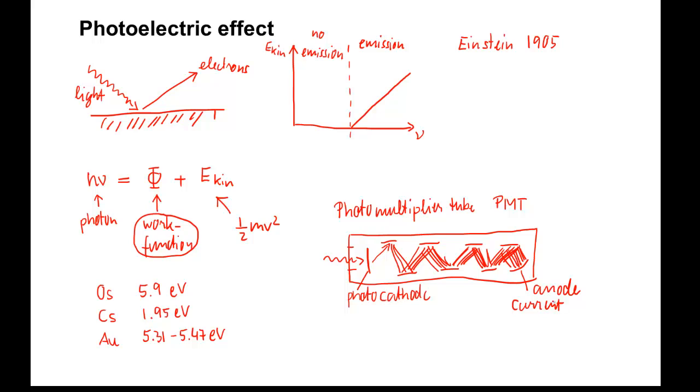The current is therefore proportional to the number of incident photons per unit time. A photomultiplier tube is a very sensitive optical detector.